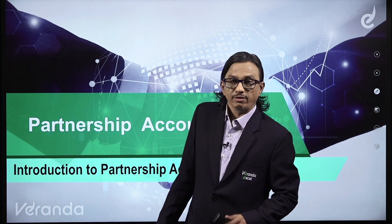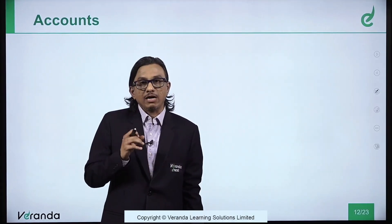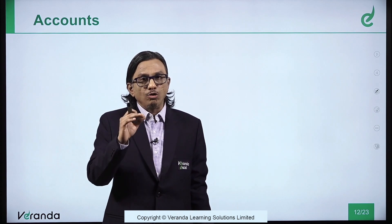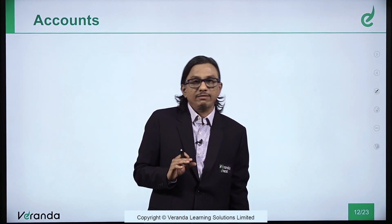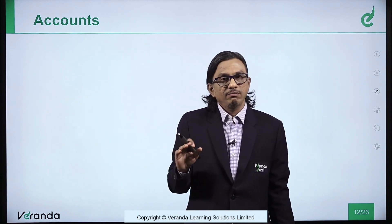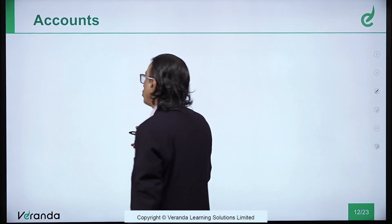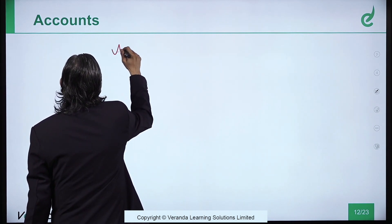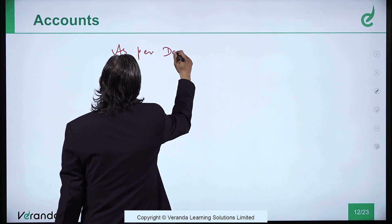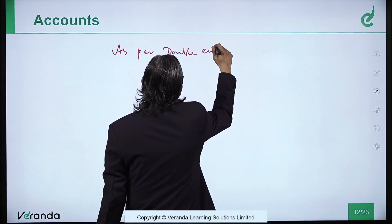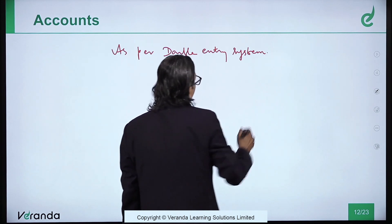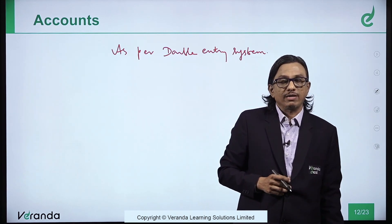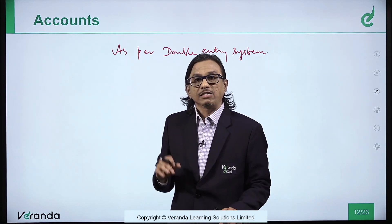Friends, now we are going to learn a very important chapter: Partnership Accounts. Accounts of a partnership are not anything different from other entities. You are carrying on a business, and you are going to do accounting as per the double entry system. For every debit, there should be an equal and corresponding credit. Double entry system should be followed.